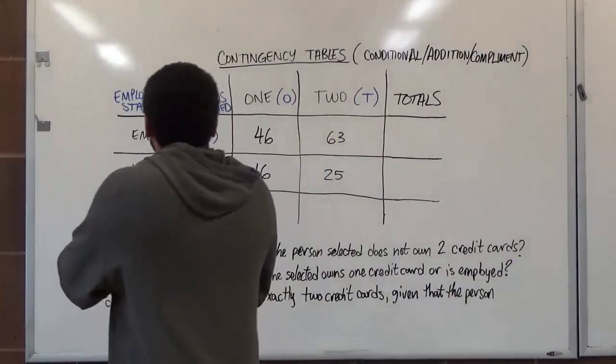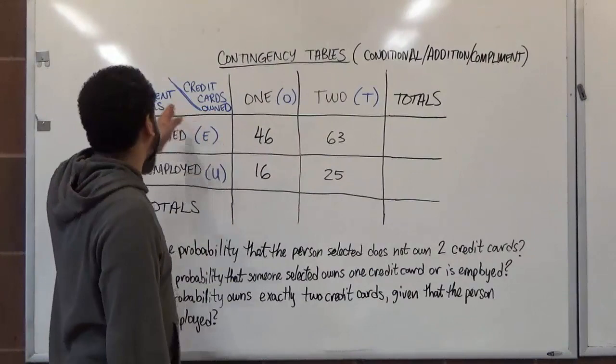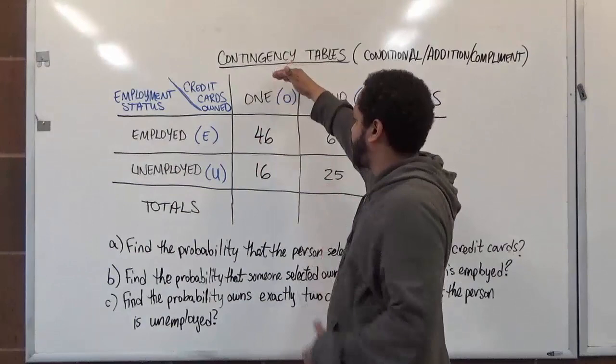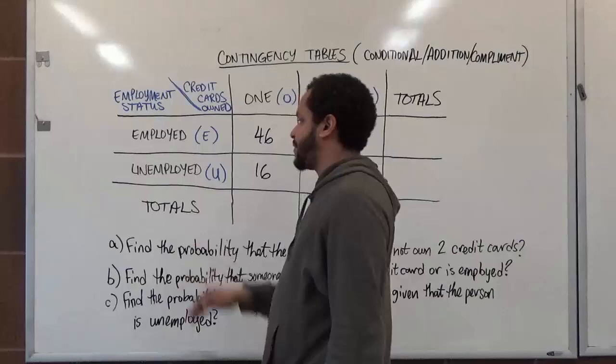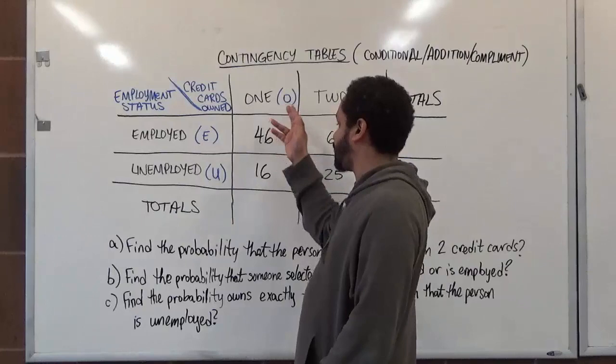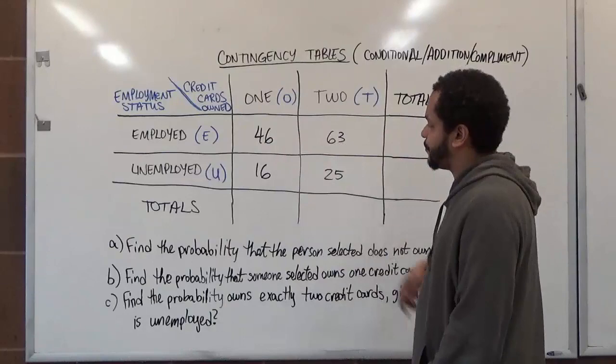For our information base, we have two variables: the number of credit cards people own and their employment status. These things are not mutually exclusive, meaning they overlap. We have results for people having either one or two credit cards, and for people being employed or unemployed. For employed: 46 people with one card and 63 with two. For unemployed: 16 with one card and 25 with two.